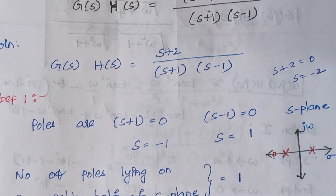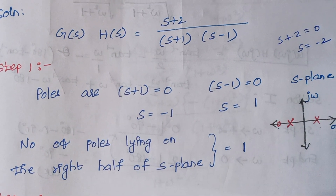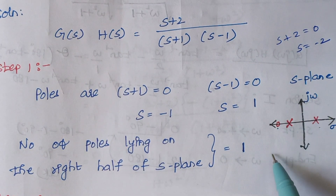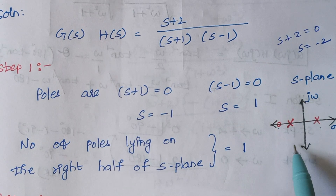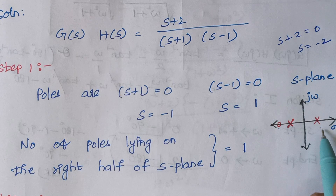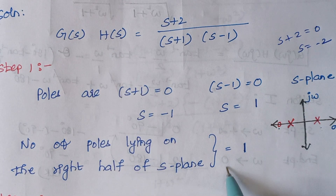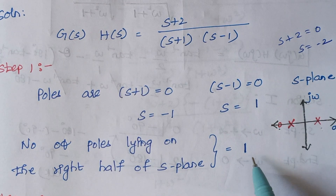Number of poles lying on the right half of the s-plane: this is our s-plane — how many poles are lying on the right half? In the right half we are having only one pole. So the number of poles lying on the right half of the s-plane is equal to 1.